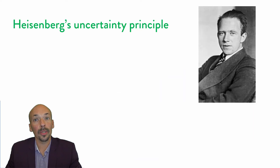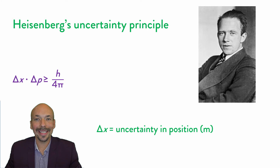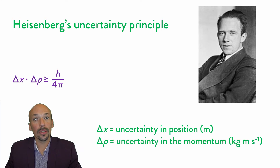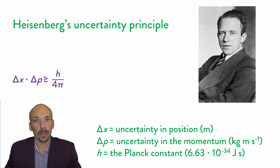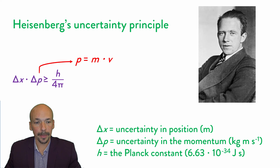Heisenberg's uncertainty principle looks like this: delta x multiplied by delta p is greater than or equal to h divided by 4 pi. Delta x is the uncertainty in position, in meters. Delta p is the uncertainty in momentum, in kilogram meters per second. And h is the Planck constant, which is 6.63 times 10 to the power of minus 34 joules per second. The momentum p can also be calculated by m multiplied by v, where m is the mass in kilograms and v is the velocity in meters per second.